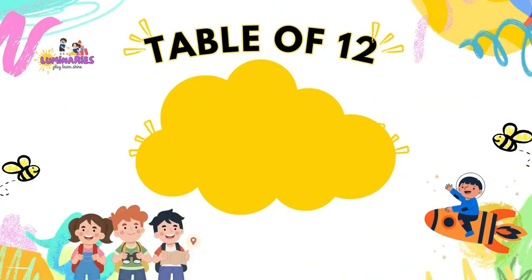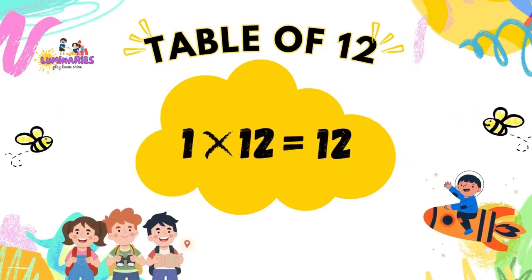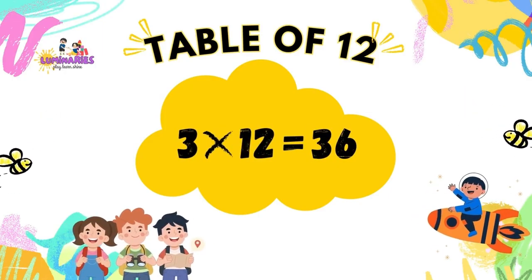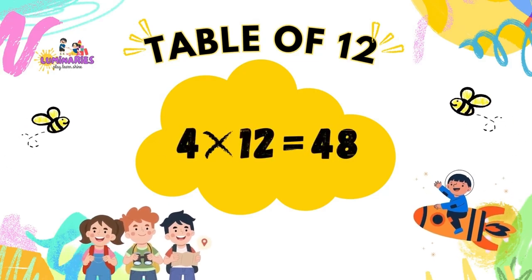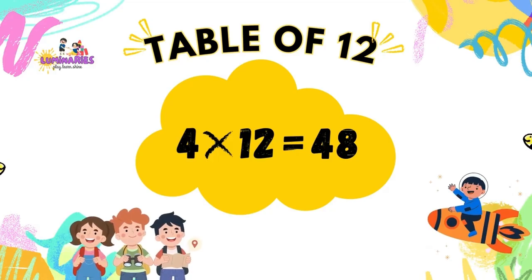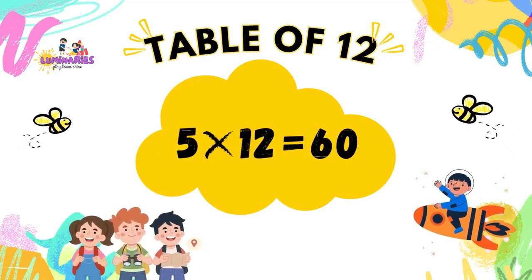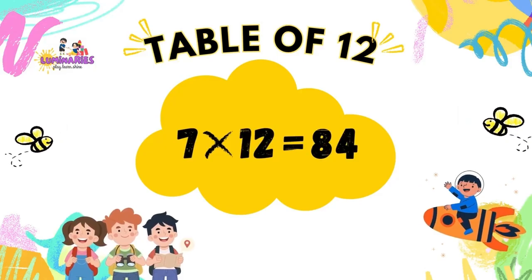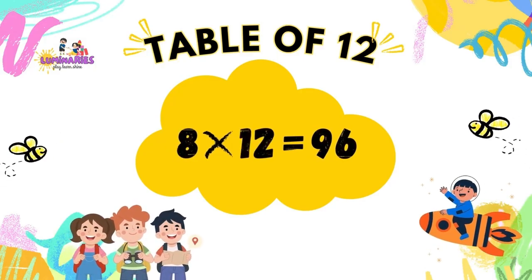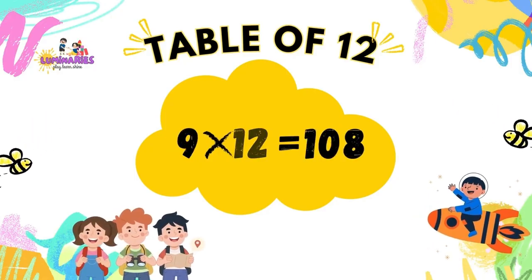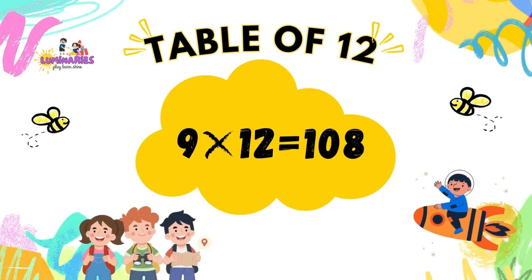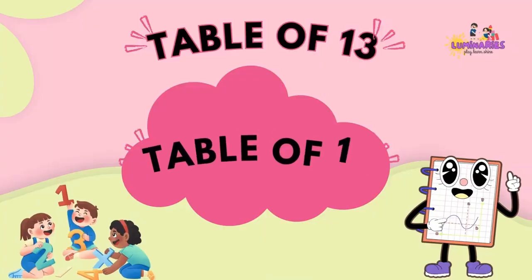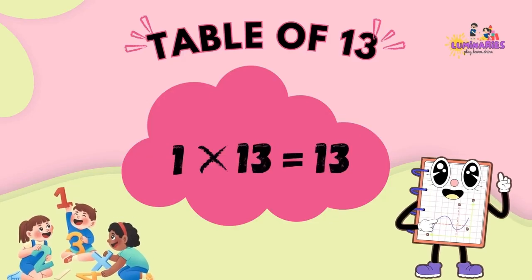Table of 12. 1 x 12 is 12. 2 x 12 is 24. 3 x 12 is 36. 4 x 12 is 48. 5 x 12 is 60. 6 x 12 is 72. 7 x 12 is 84. 8 x 12 is 96. 9 x 12 is 108. 10 x 12 is 120.